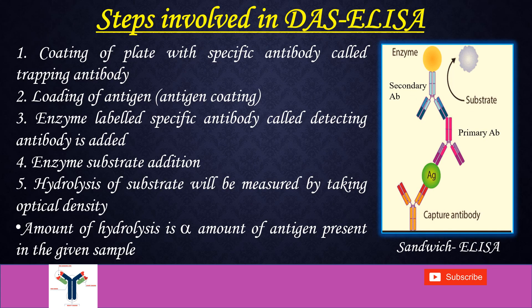Let us see the different steps involved in double antibody sandwich ELISA. First step is coating of the ELISA plate with a specific antibody called trapping antibody or capture antibody. After addition of capture antibody we load the antigen — that is the protein of interest we want to detect. After addition of antigen we add the enzyme labelled specific antibody called detecting antibody. Then enzyme substrate is added and hydrolysis of the substrate is measured by taking optical density. The amount of hydrolysis is proportional to the amount of antigen present in the given sample.